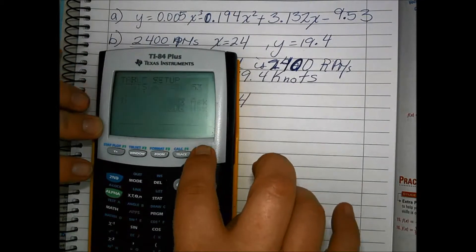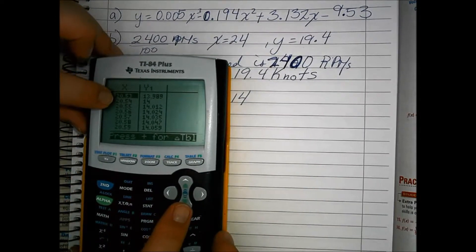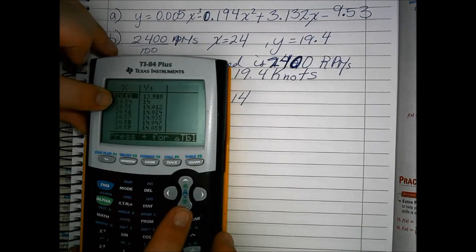And that will give us the view of the table from here. And you can see that our x value is 20.54.